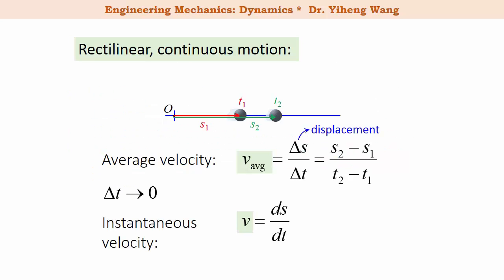From the previous video we've already learned that the average velocity is defined as the change in the object's position — the displacement — over the change in time, and instantaneous velocity is the time derivative of the position function.